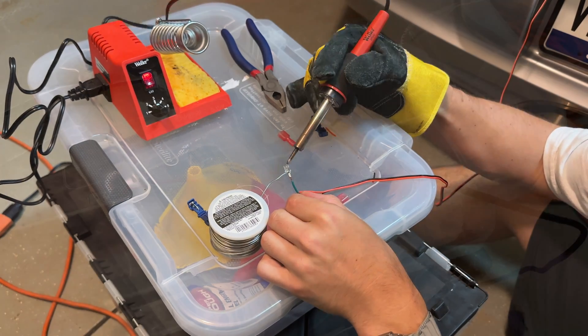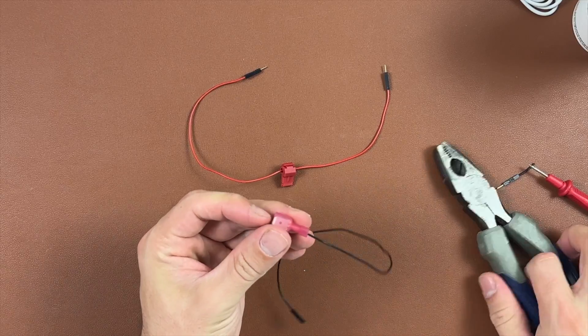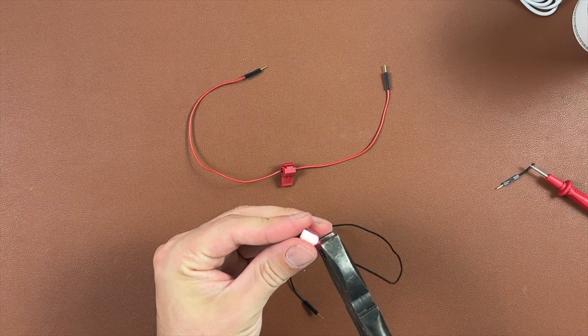Wrap the stripped wire around the metal connector and solder it down. Once soldered, push the housing back on, and then gently crimp the housing onto that.